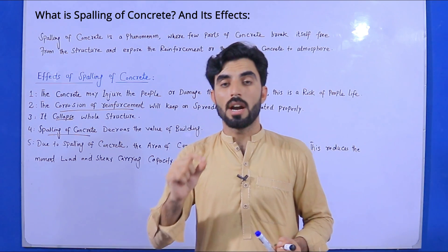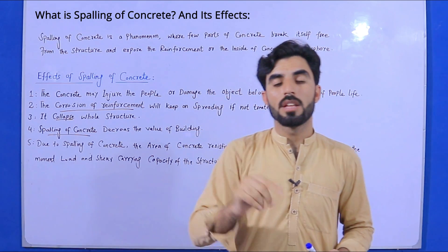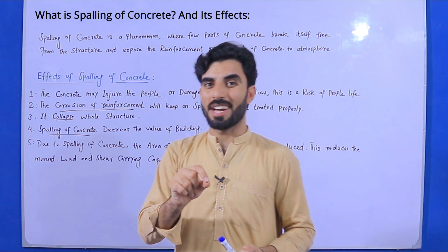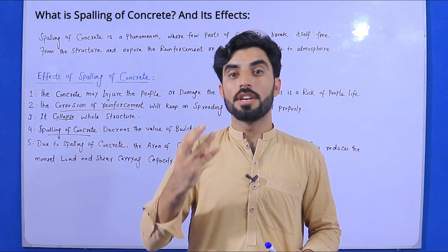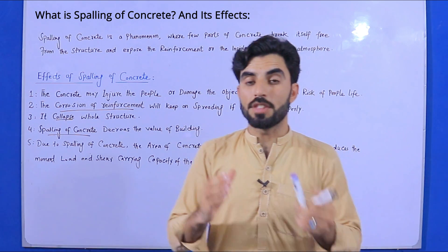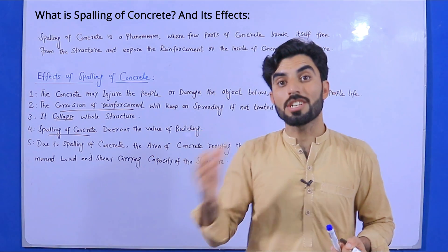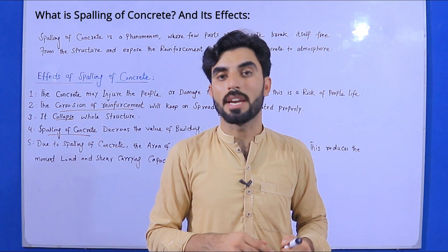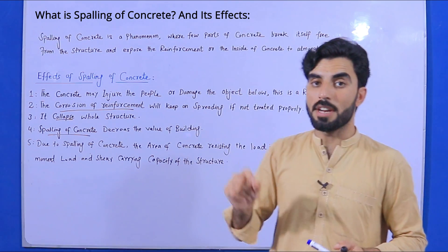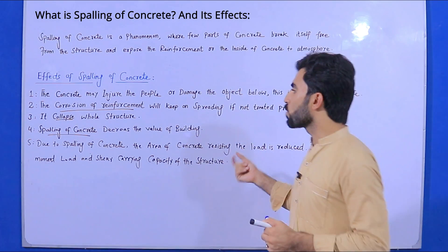The fourth cause — which I had forgotten earlier — is improper steel structure design. If the ratio of concrete is less than required according to the structural design, spalling can occur. So improper design of steel structure is also a cause of spalling of concrete.